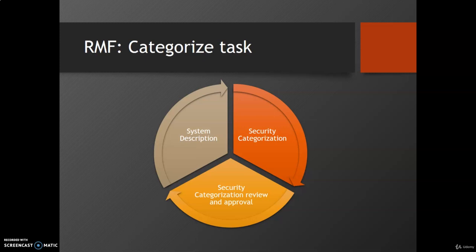The third task is security categorization review and approval. At this point, we have described the systems, maintained the system descriptions, and defined the security categories based on impact level — either the high water mark model or three-level impact. Now we need to review the category and approve it. This task involves reviewing and approving the security category results and decisions for the information system.